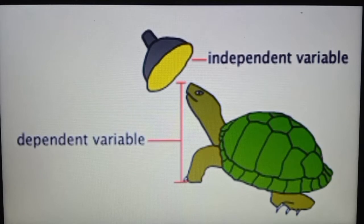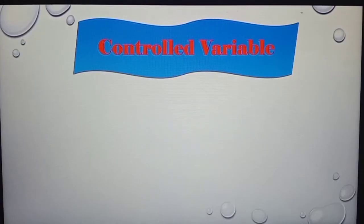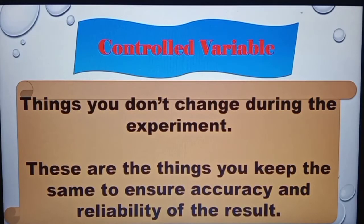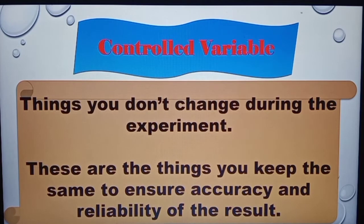Look at the picture. What do you think is the dependent variable and independent variable? The third one is the controlled variable — things you don't change during the experiment, or the things that you keep the same to ensure accuracy and reliability of the result. We can keep the experiment fair by keeping everything the same and changing just one thing.